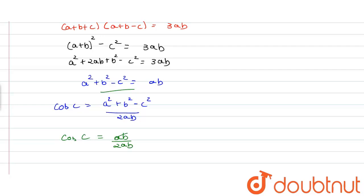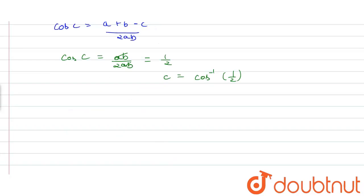By solving this we get 1 upon 2. So, C is equal to cos inverse 1 by 2. So by solving this we get C is equal to pi by 3 or 60 degrees, because cos pi by 3 is equal to 1 by 2.